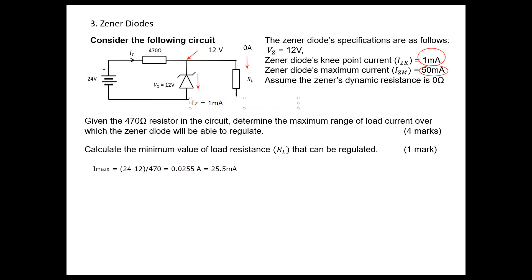We already calculated the maximum current through the resistor is 25.5 milliamperes. When we have 1 milliampere through the Zener, what will be the remaining current? That should be, in this situation...